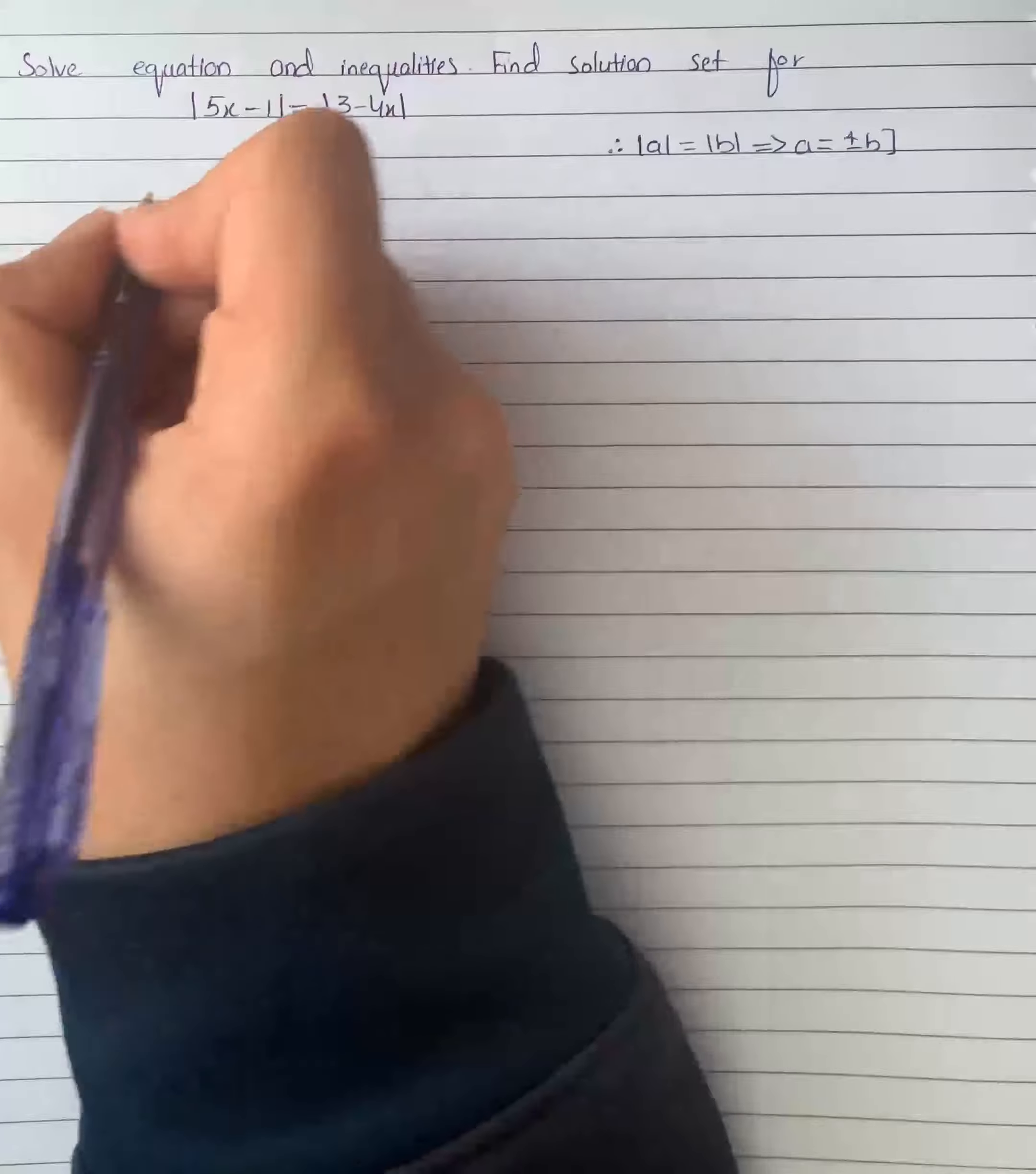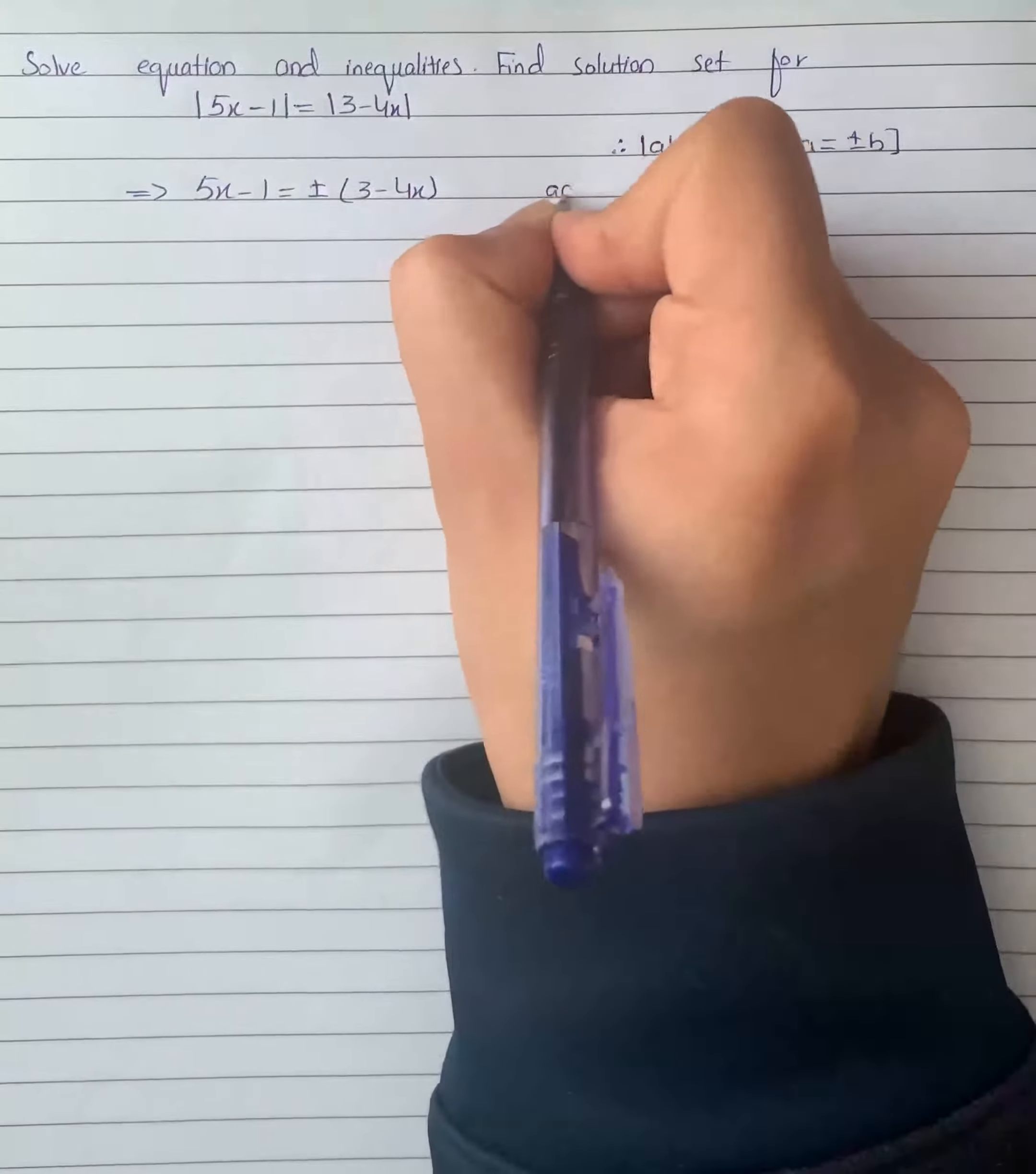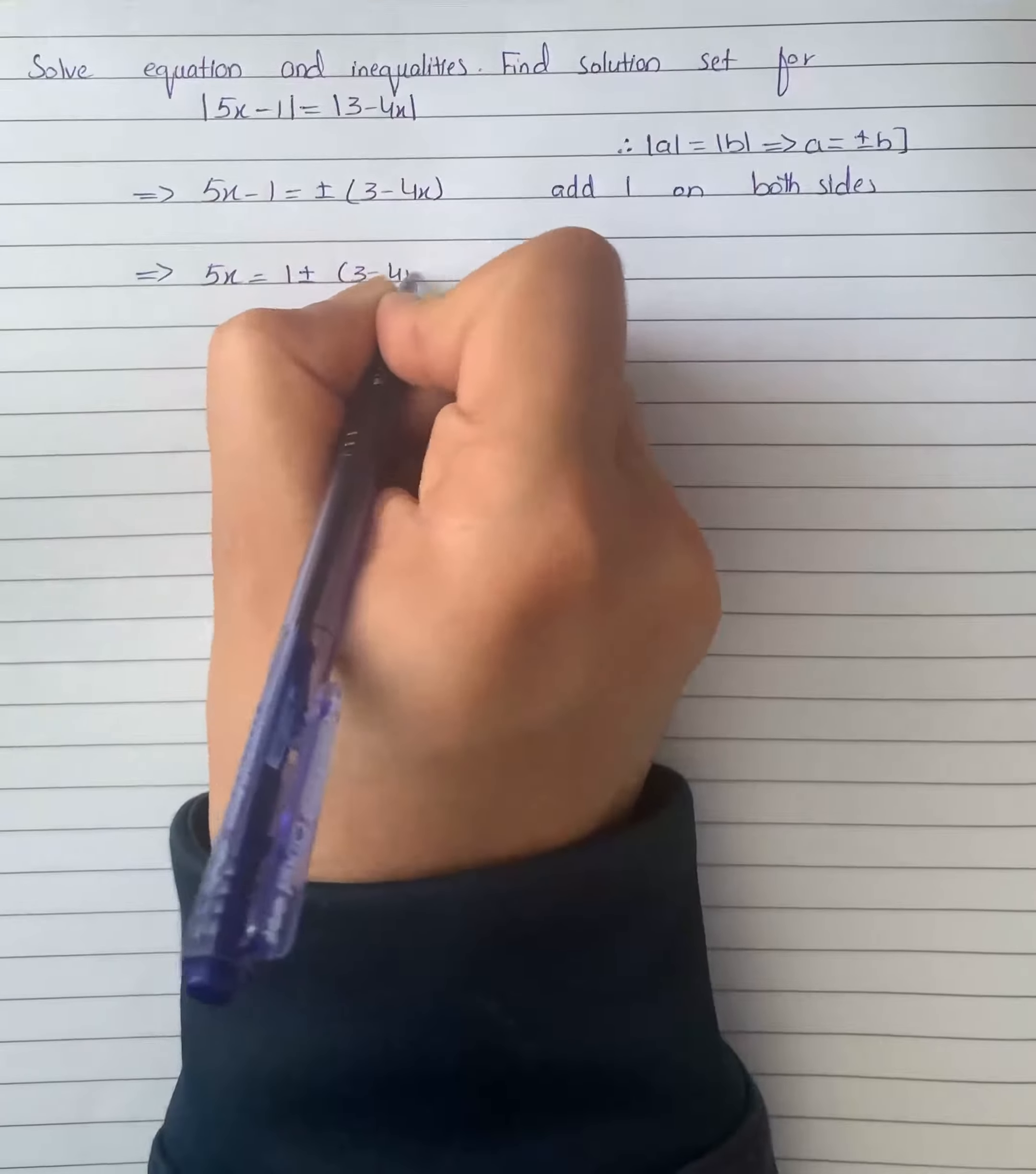So the given equation will become 5x - 1 = ±(3 - 4x). Now we will add 1 on both sides to eliminate this -1, and it will become 5x = 1 ± (3 - 4x).